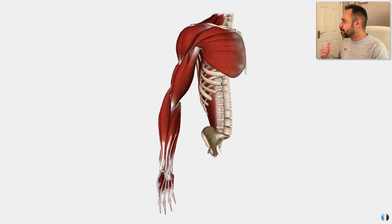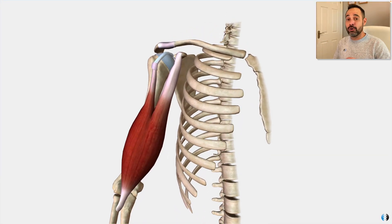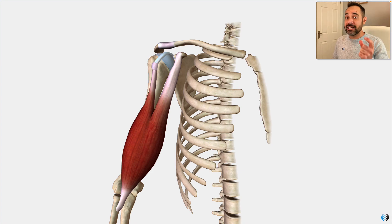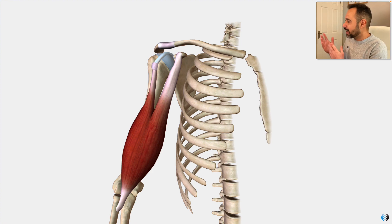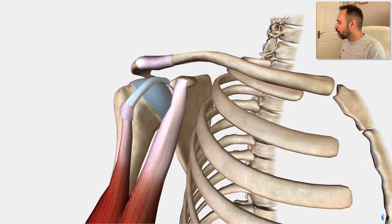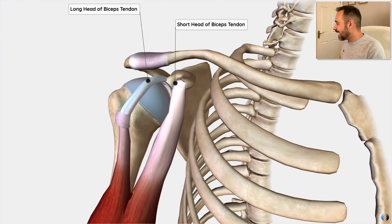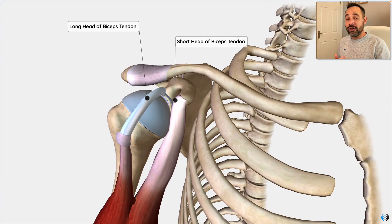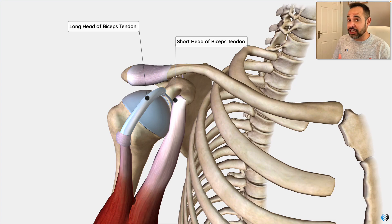Let's look at the biceps muscle, or what it's more medically referred to as the biceps brachii muscle. The word biceps is really important because it tells us this muscle has two heads, and we can quite clearly see this on the anatomical model where the origin of the biceps shows those two heads — a long head and a short head. We're going to be focusing on the long head, which is the one that sustains more pathology, probably because of how closely it is knitted with the shoulder.